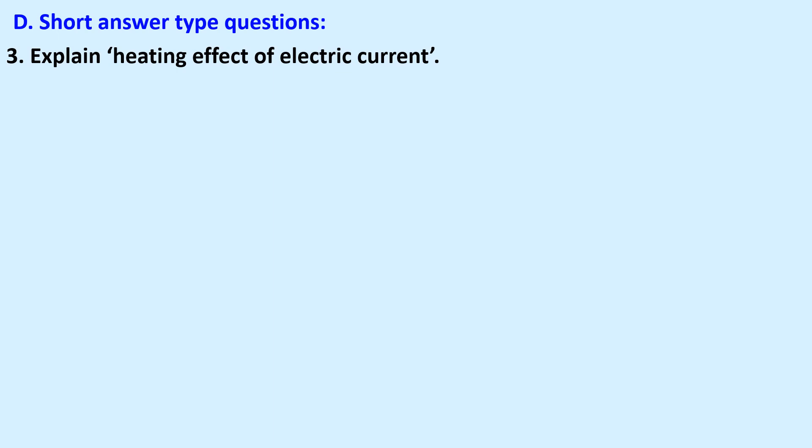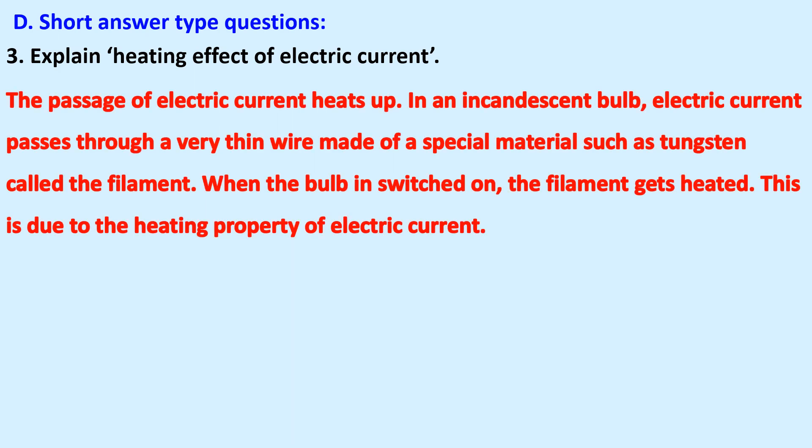Explain heating effect of electric current. The passage of electric current heats up. In an incandescent bulb, electric current passes through a very thin wire made of a special material such as tungsten, called the filament. When the bulb is switched on, the filament gets heated. This is due to the heating property of electric current.